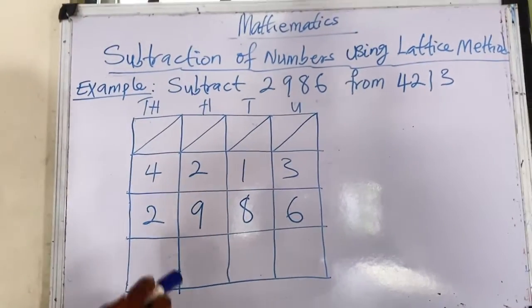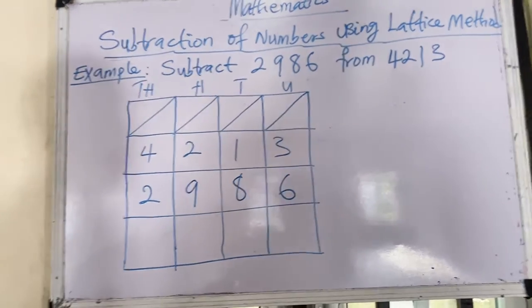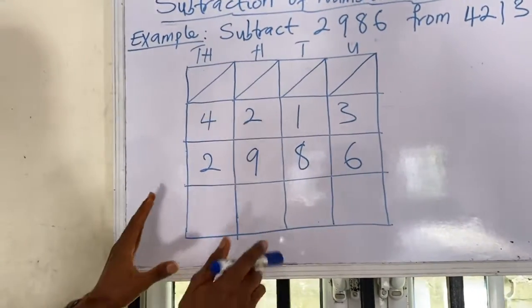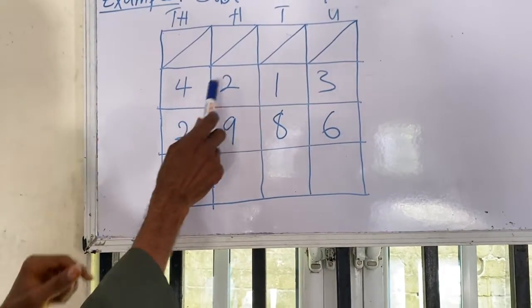The question says subtract 2986 from 4213. So this is how you do it. You arrange your box. This is your box. Each of them stands for a digit. Look at them.